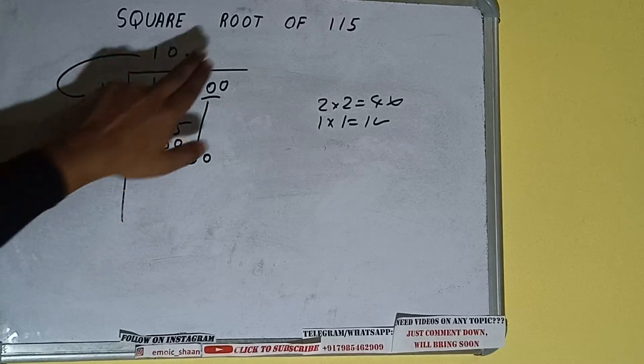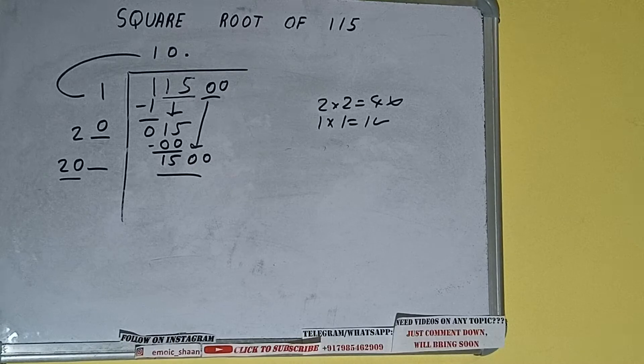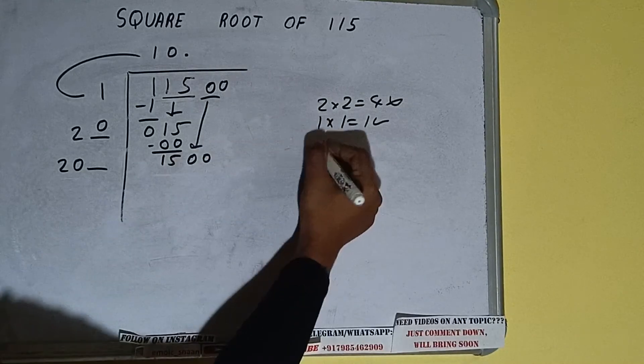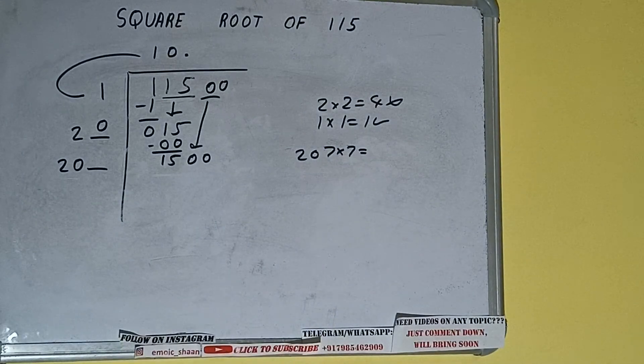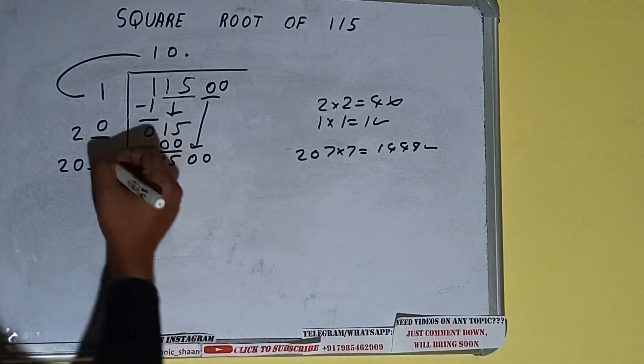Now whatever number we write here we have to write here also. So we can compare this 20 and 150. So 20 times 7 is 140 right. So we can try 7 times. 207 into 7 we can try.